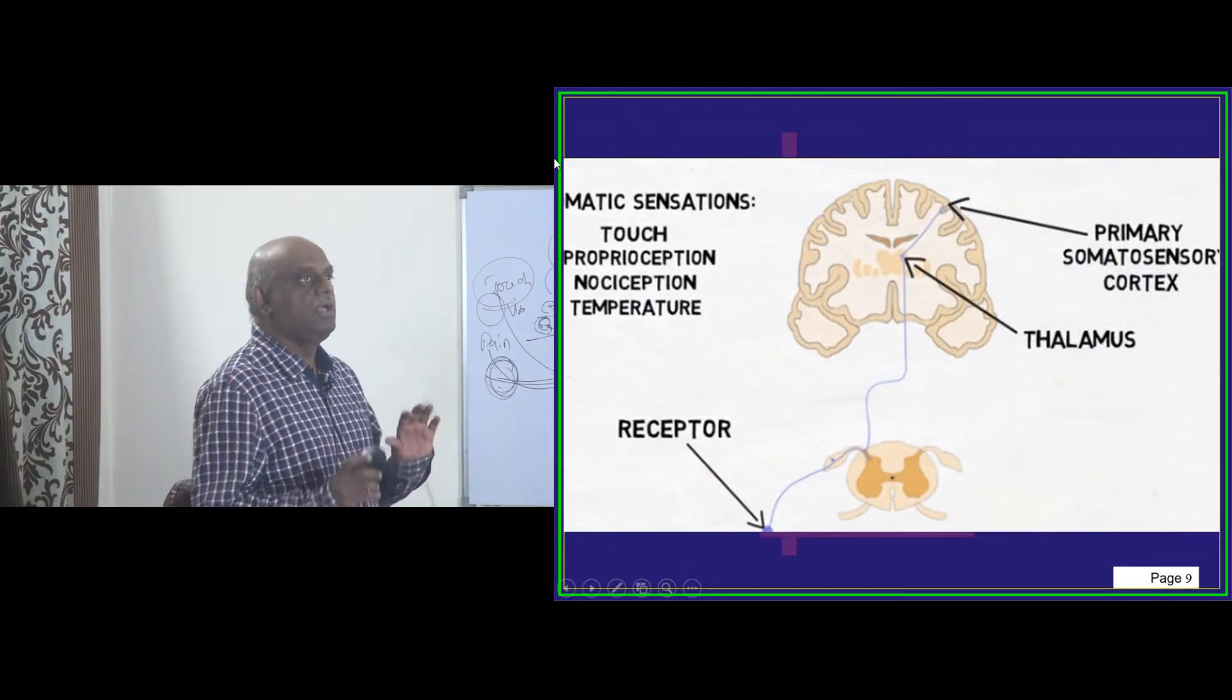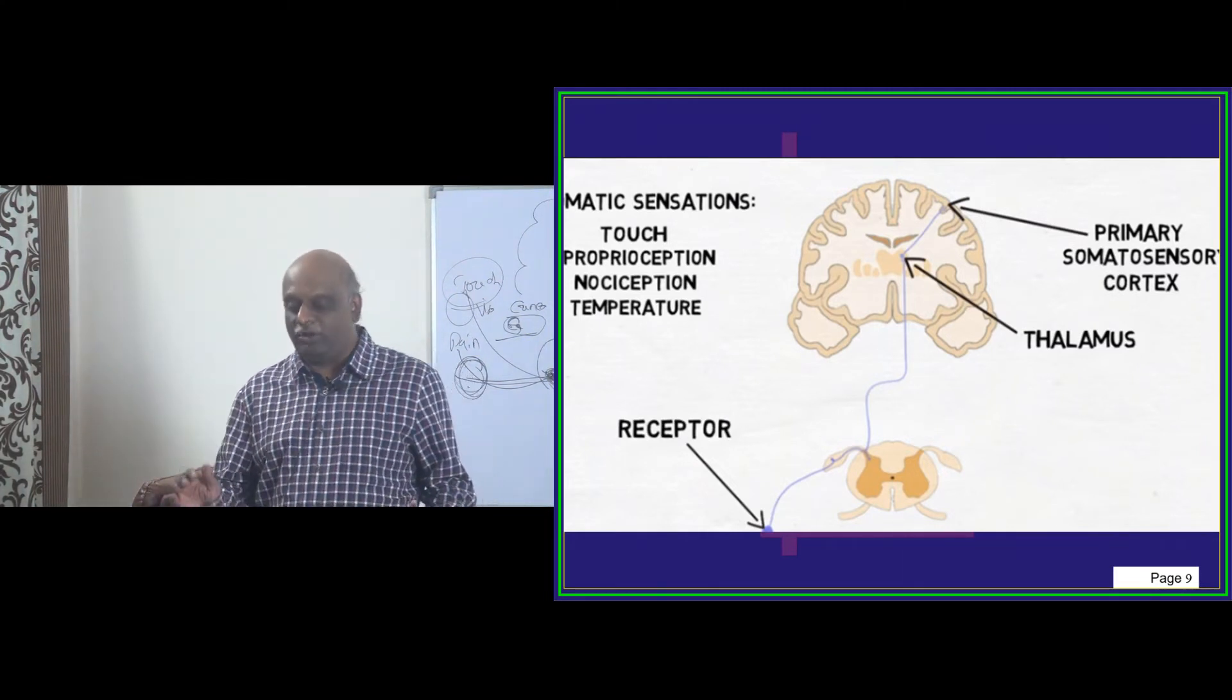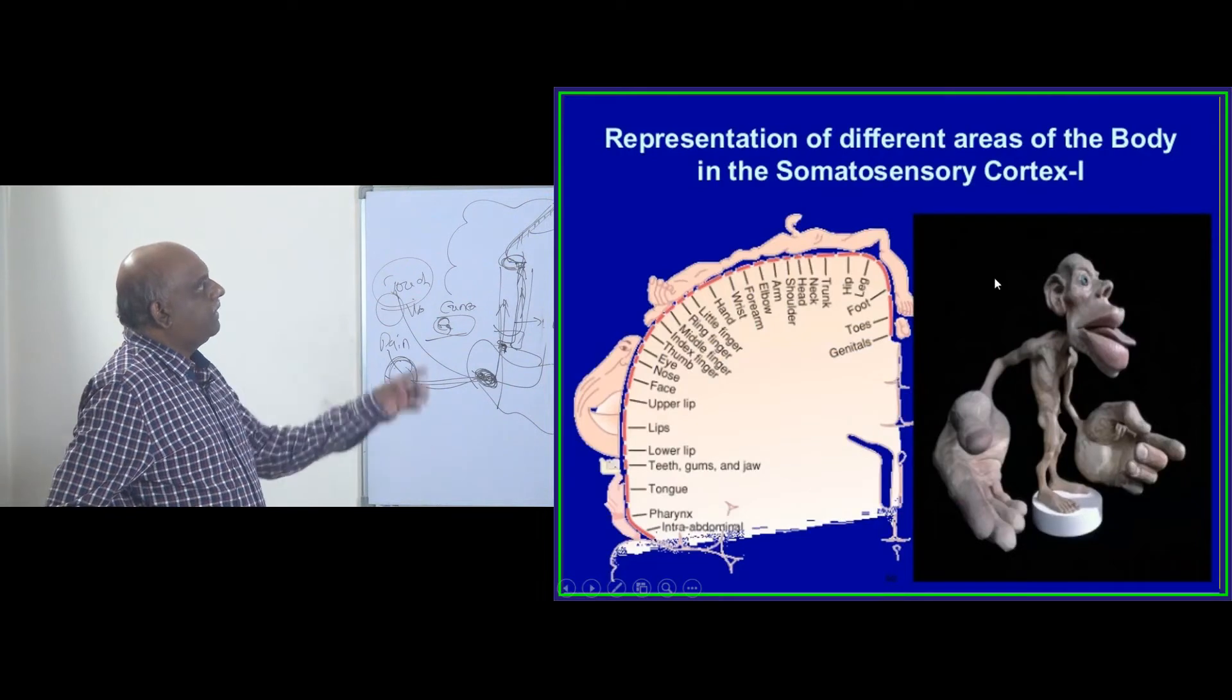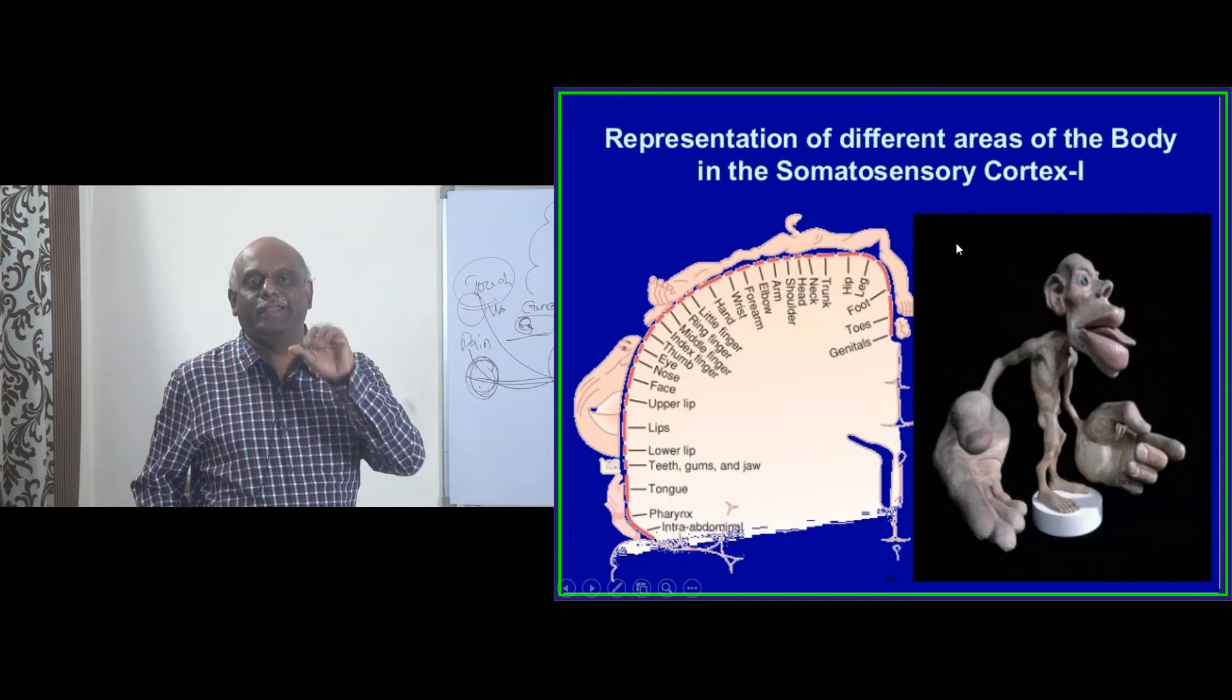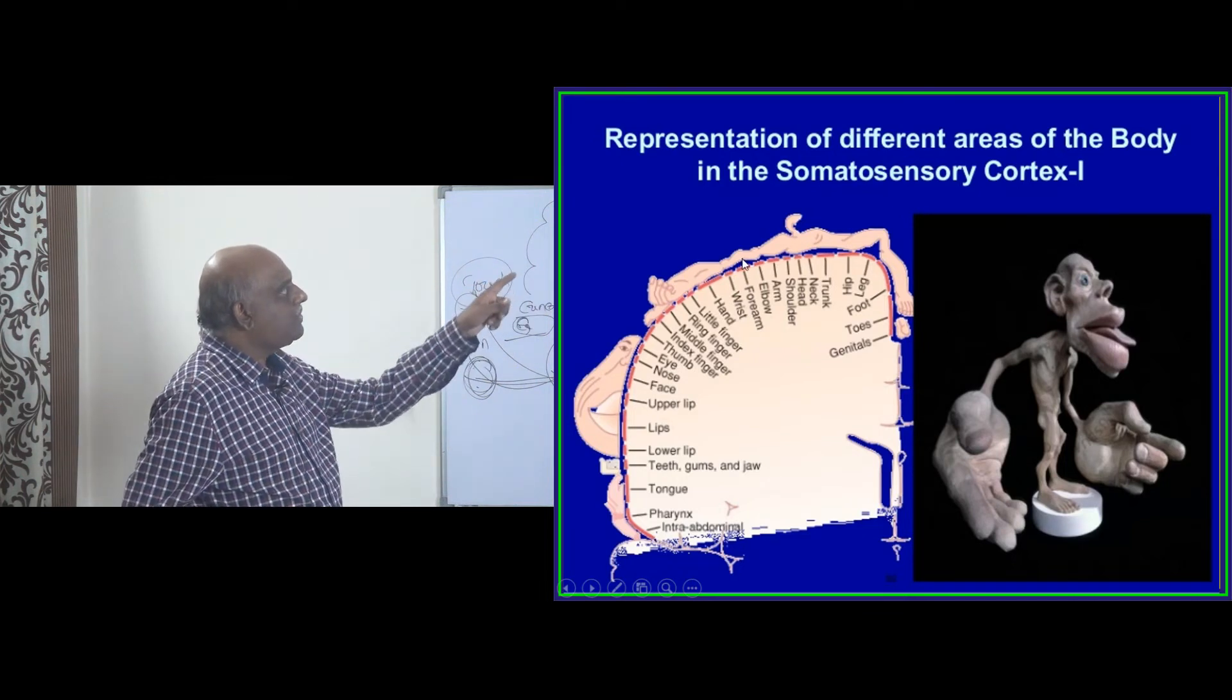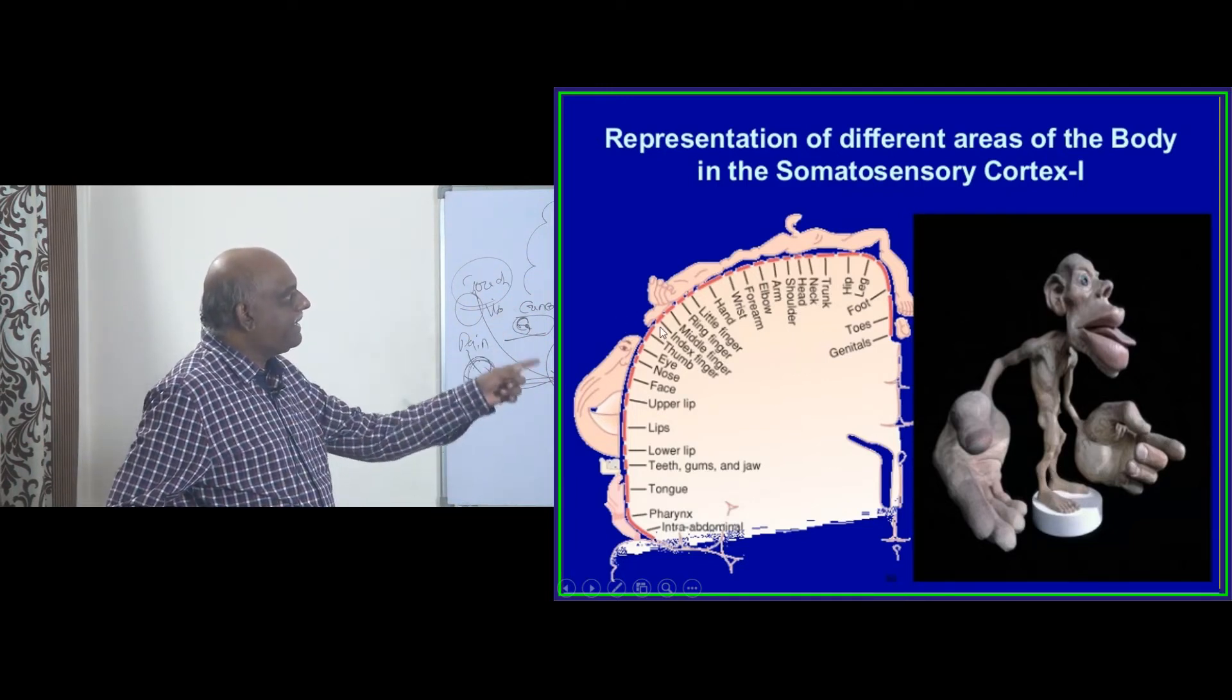Haritosh says all sensations are being reported to the thalamus except the smell, olfaction, which goes without reporting to the thalamus. So if you look at the different areas, whenever you are getting the touch or vibration, etc., they are all represented on the somatosensory cortex with a sensory homunculus, just like motor homunculus.